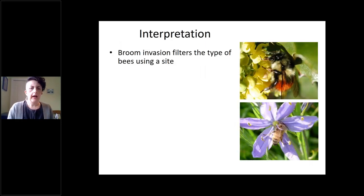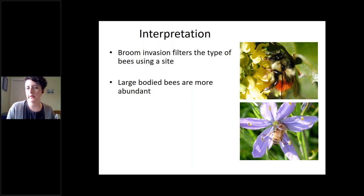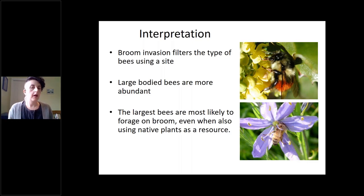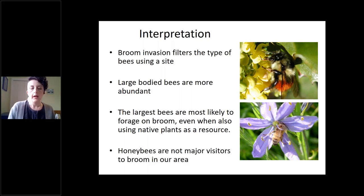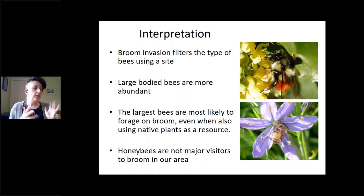So what does this mean? It's pretty clear evidence that broom invasion filters the types of bees using a site to forage. Large-bodied bees become more prevalent as smaller-bodied bees become restricted from using that location. Bombus melanopagus, being the largest-bodied bee we studied, is most likely to forage on broom even when also using native plants. Unlike in places like Australia where honeybees and scotch broom have an invasive mutualism partnership, at least in our location in Victoria, honeybees were not major visitors to broom.